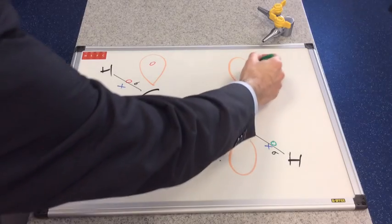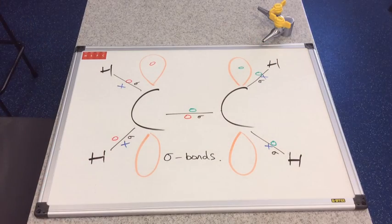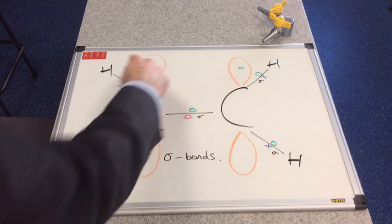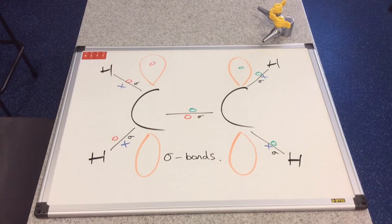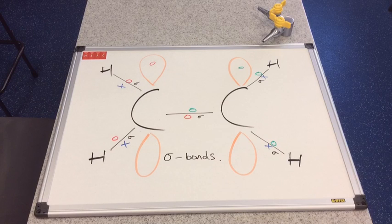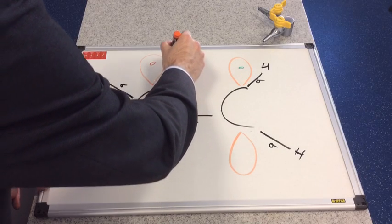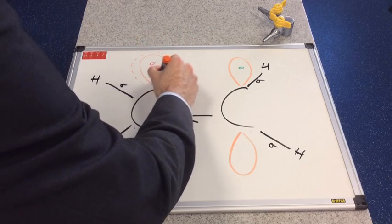And the green one is somewhere in there. Now, at the moment, these electrons aren't a shared pair. So it's not a covalent bond yet. Something has to happen for that to turn into a covalent bond. So, what happens is the p orbitals actually expand.